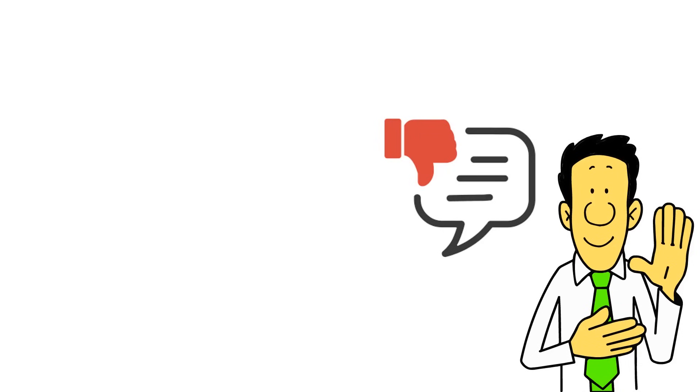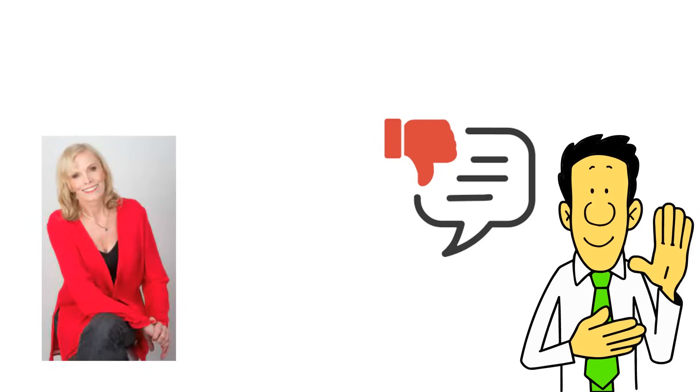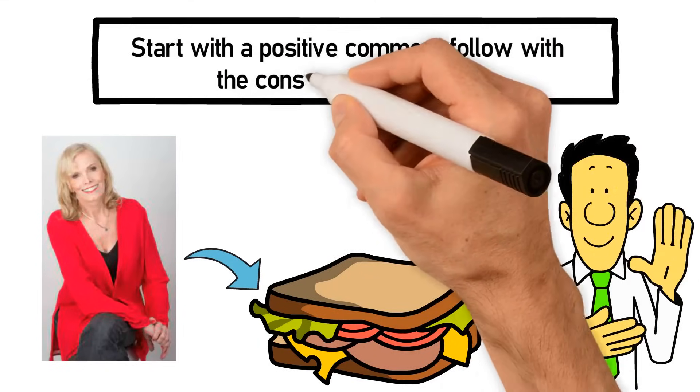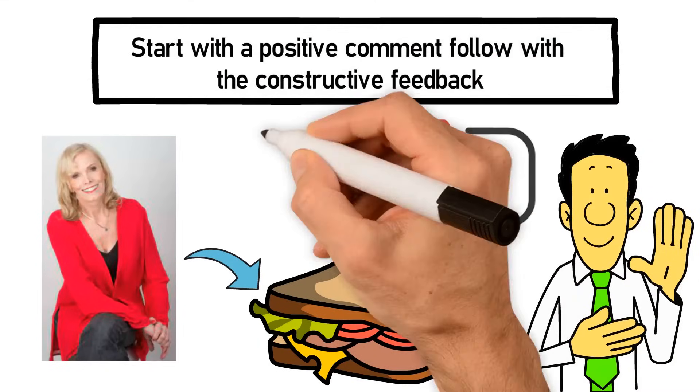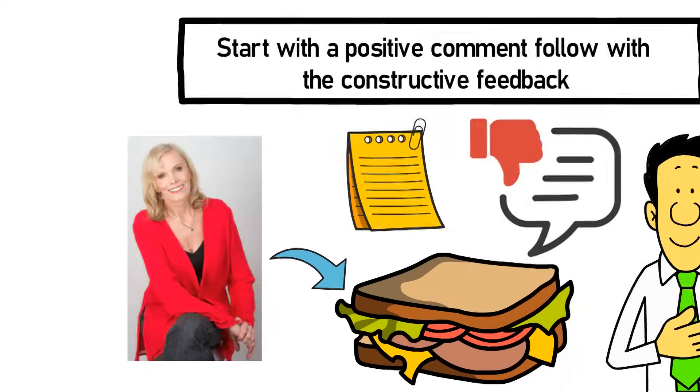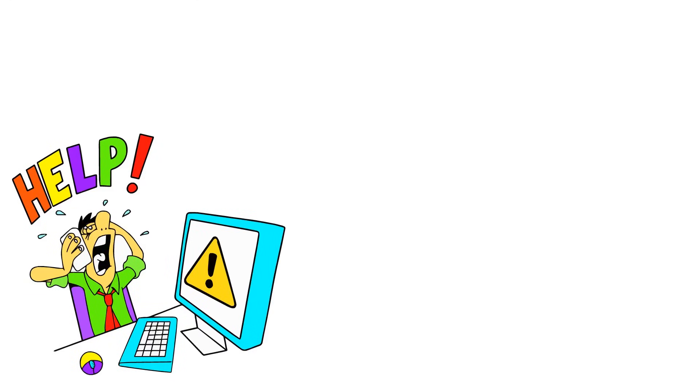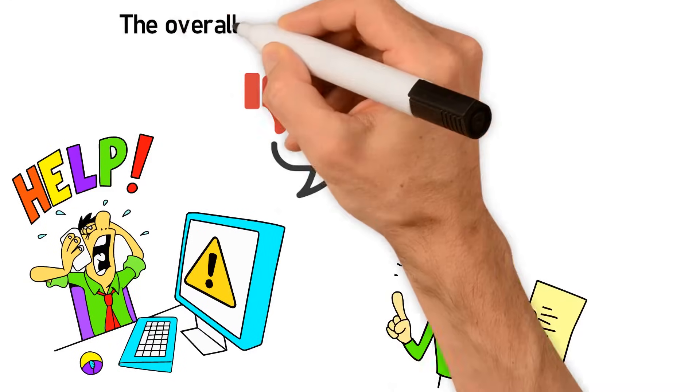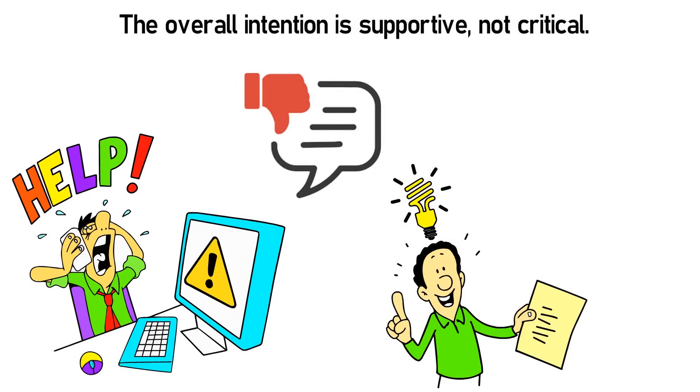When it comes to delivering negative feedback, it's crucial to be honest yet tactful. Lowndes suggests the sandwich method. Start with a positive comment, follow with the constructive feedback, and conclude with another positive note. This approach helps cushion the impact of the negative feedback and reinforces the idea that the overall intention is supportive, not critical.